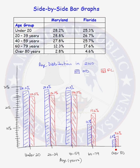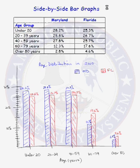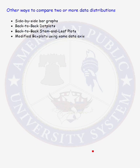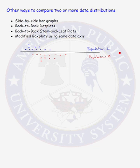By looking at side-by-side bar graphs, we can compare two data distributions for two different populations. Other ways to compare two or more data distributions include back-to-back dot plots. Here is an example of back-to-back dot plots, where the top is a regular dot plot and the bottom shows the data for population two.